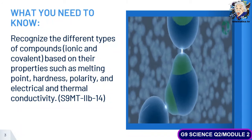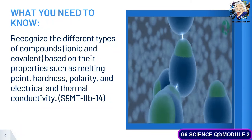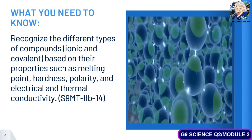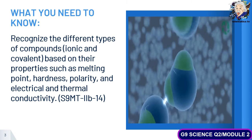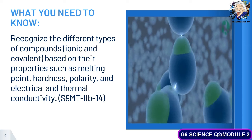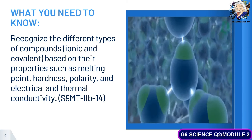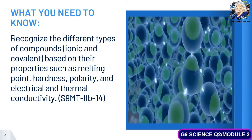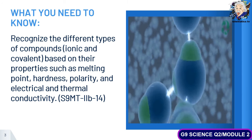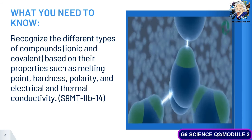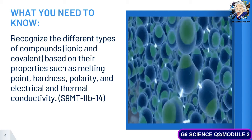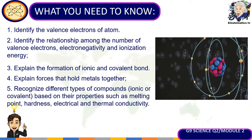Today's video is anchored on this most essential learning competency — we are going to recognize the different kinds of compounds, specifically ionic and covalent, based on their properties such as melting point, hardness, polarity, and electrical and thermal conductivity.